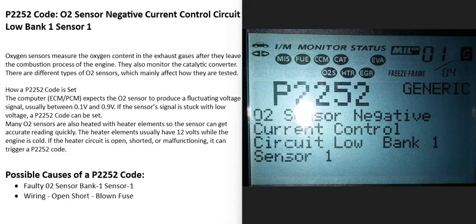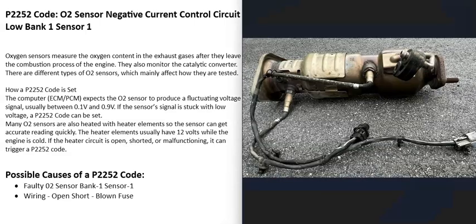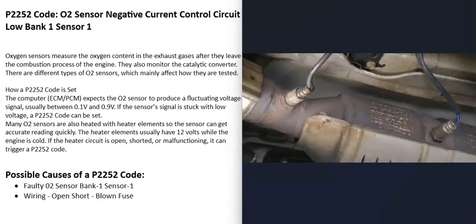Located down on the exhaust are what's called O2 sensors — oxygen sensors. They do two things: first, they monitor the catalytic converter, and second, they monitor how much oxygen has been burnt off during combustion. The computer uses that information to adjust the air-fuel ratio mixture going into the cylinders.